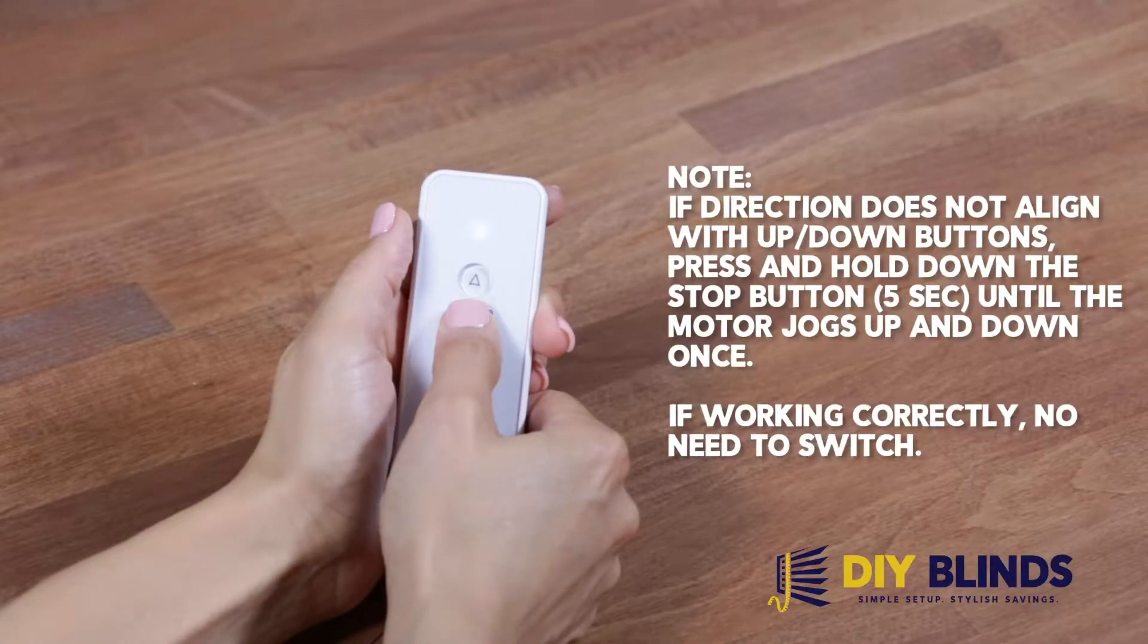Note: if direction does not align with up and down buttons, press and hold the stop button for 5 seconds until the motor jogs up and down once. If working correctly, no need to switch.